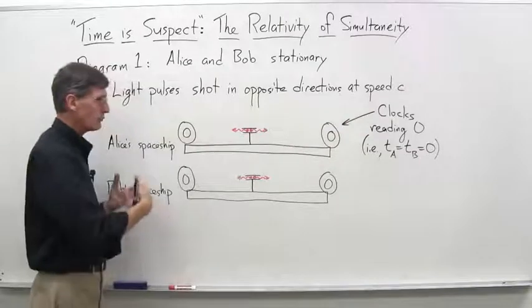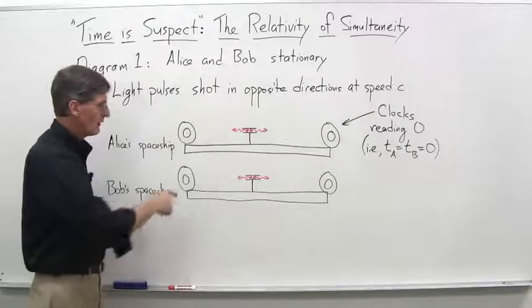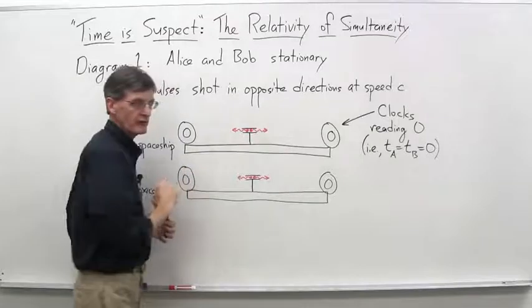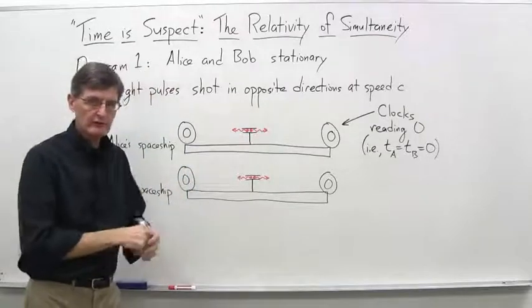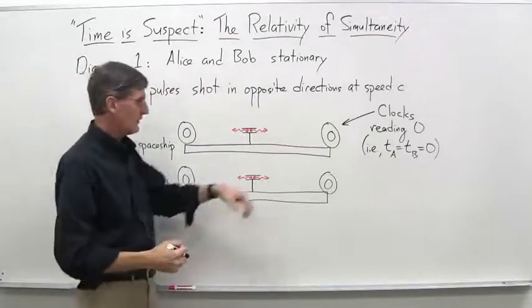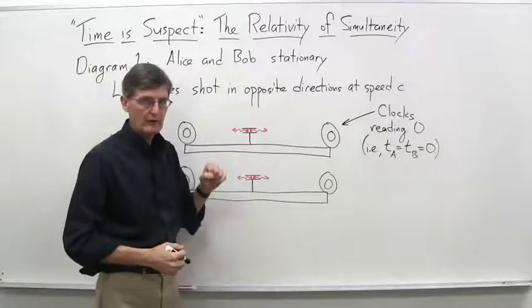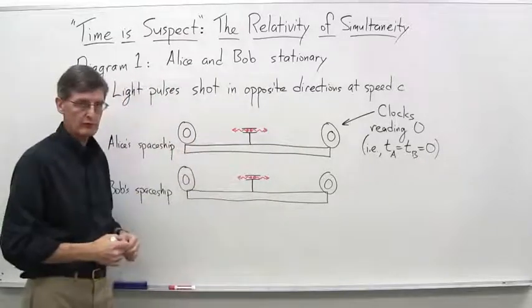And we just want to analyze what's going to happen here. We have the clock set up so that when a light pulse reaches the clock, it sets a little trigger, takes a photograph, and records the time on that clock. Same thing for this clock and Bob's clocks as well.